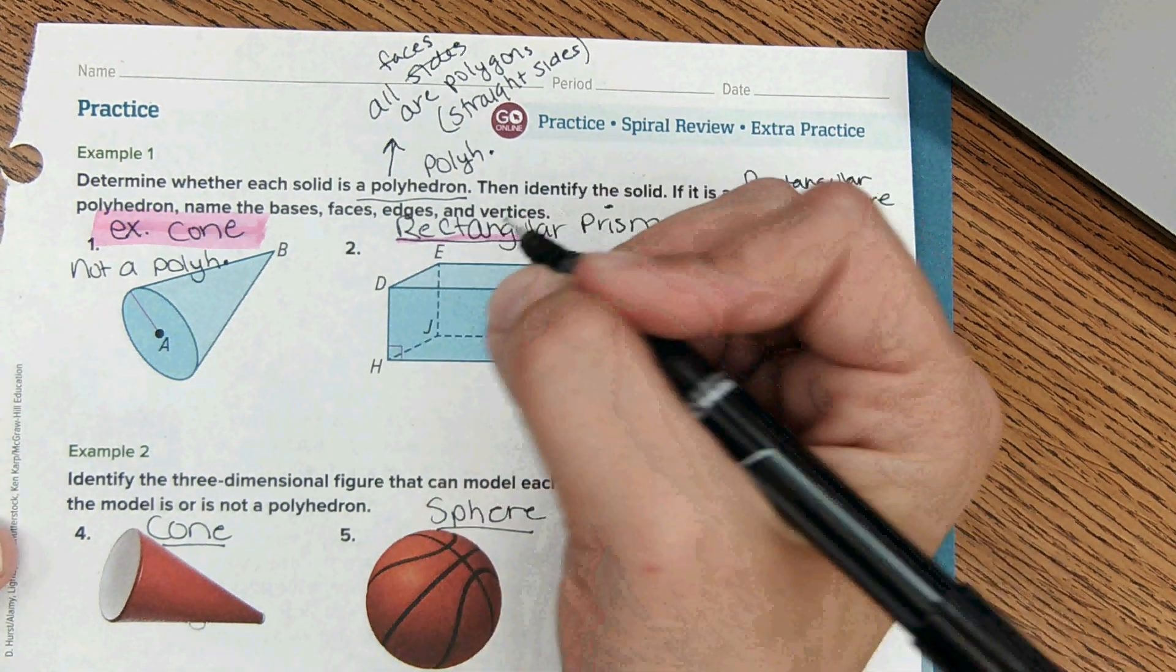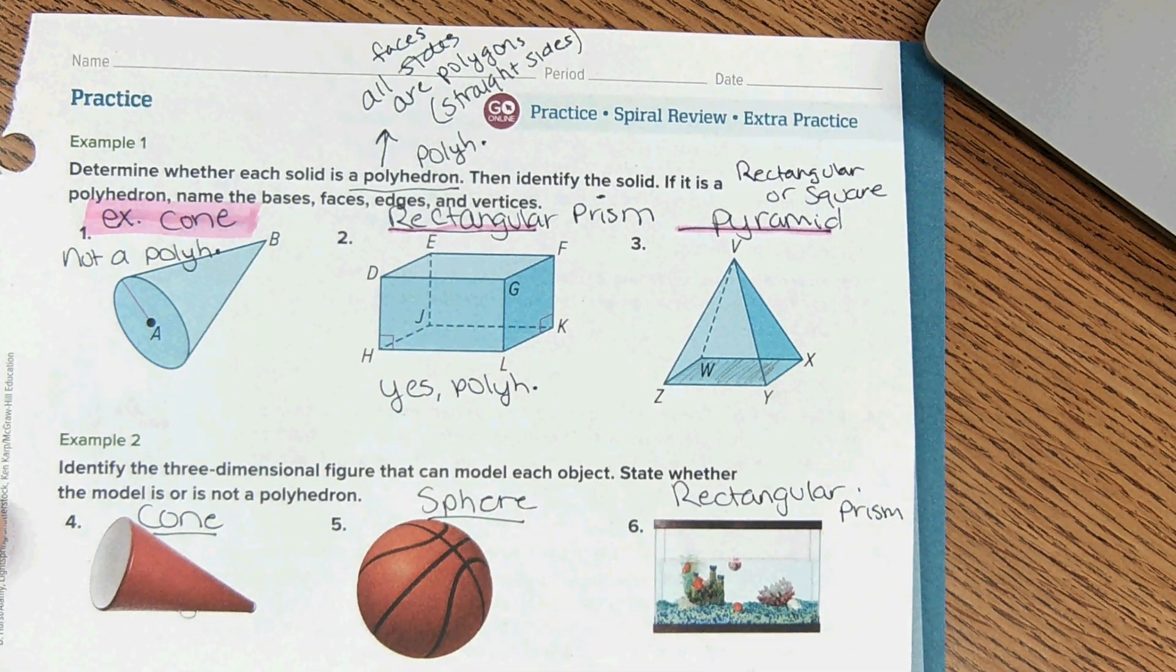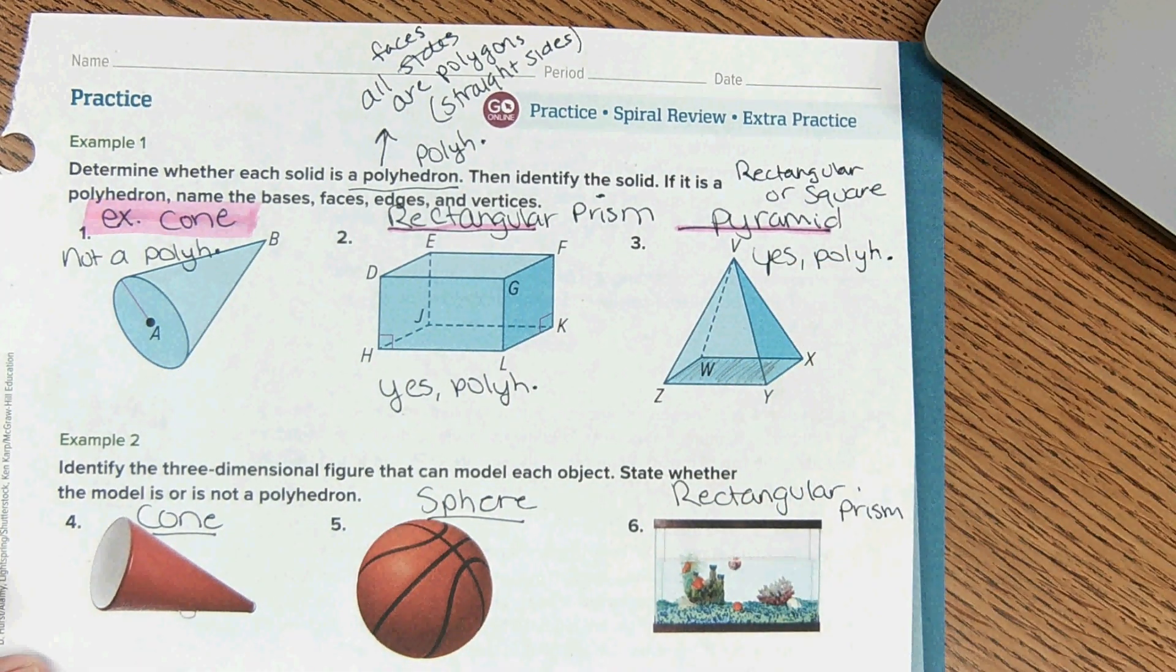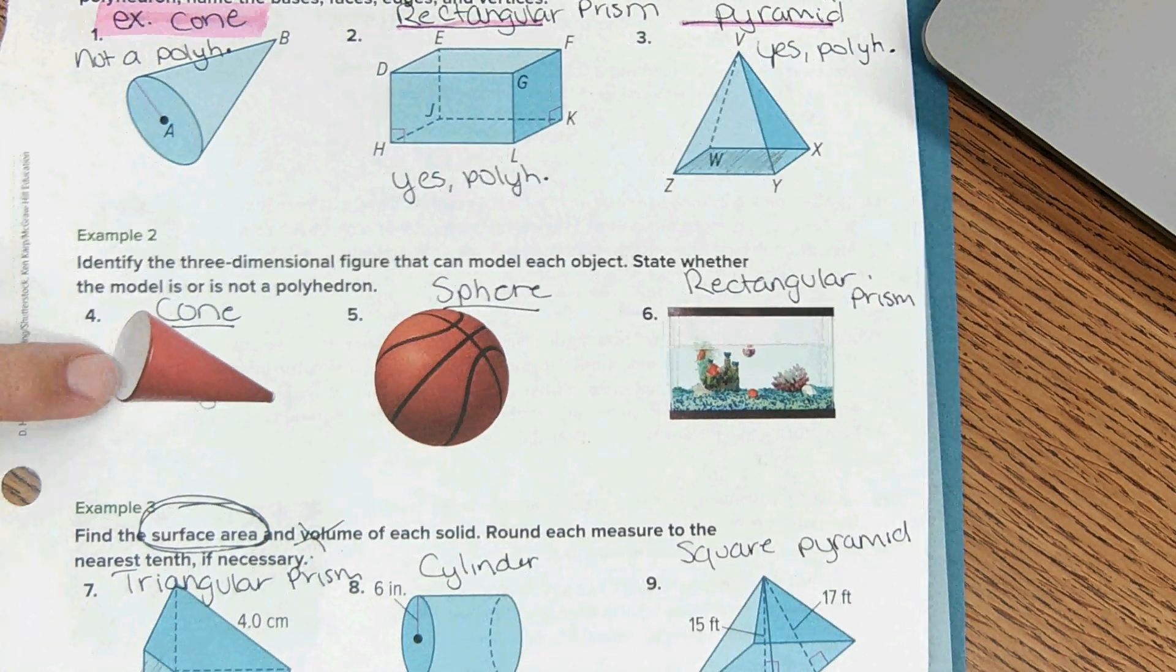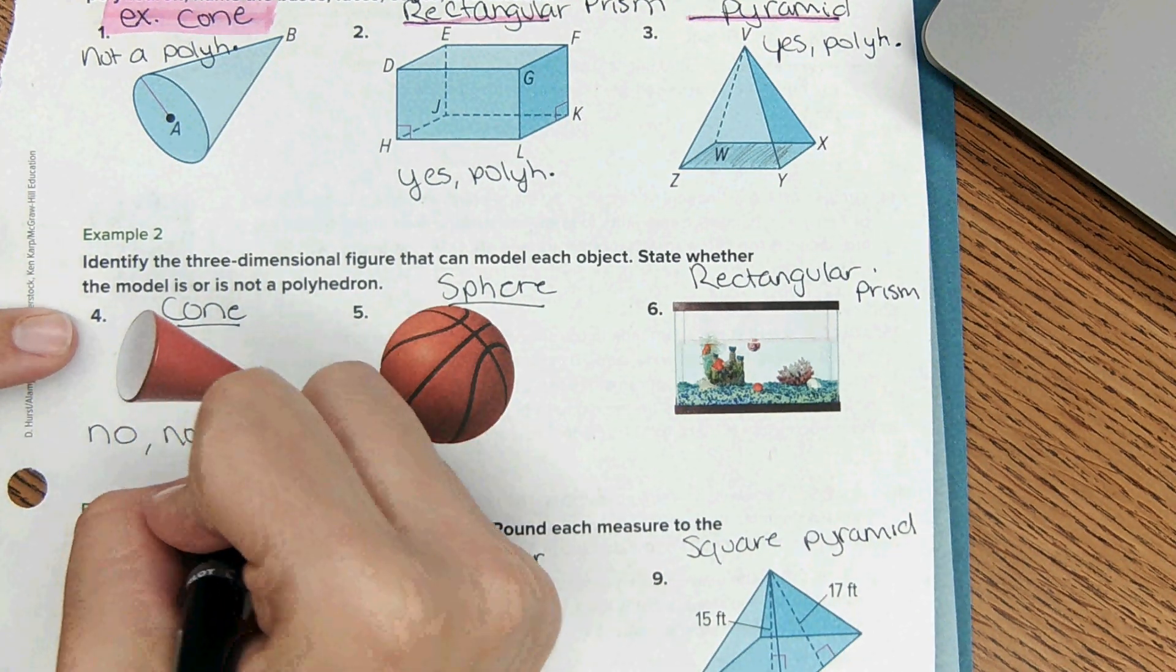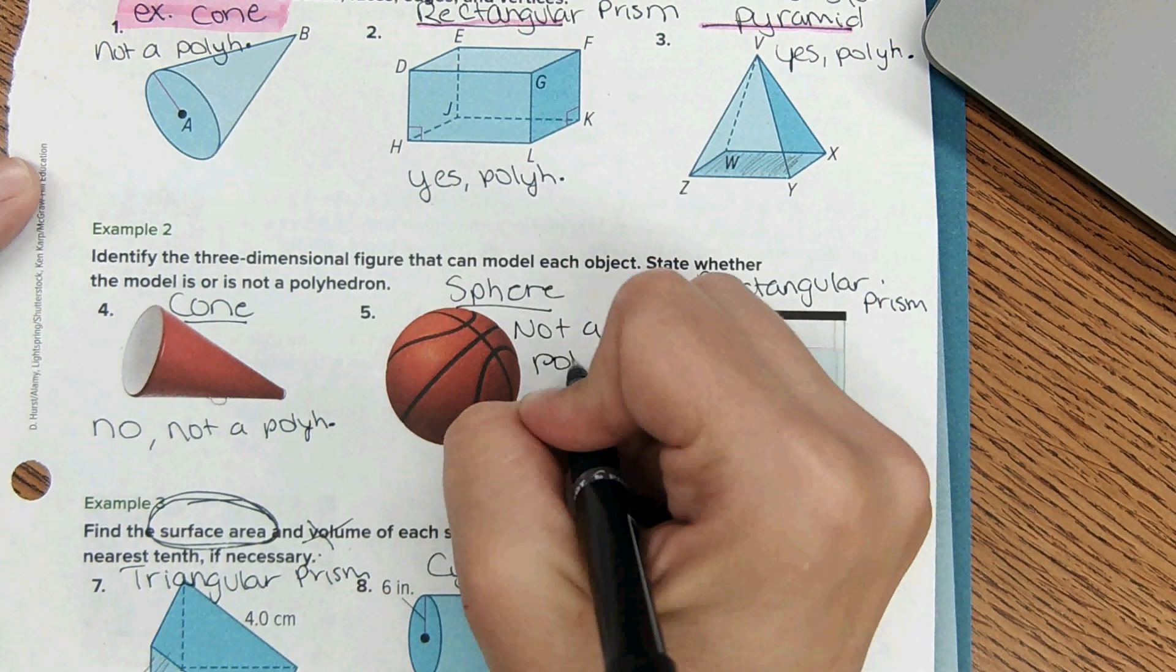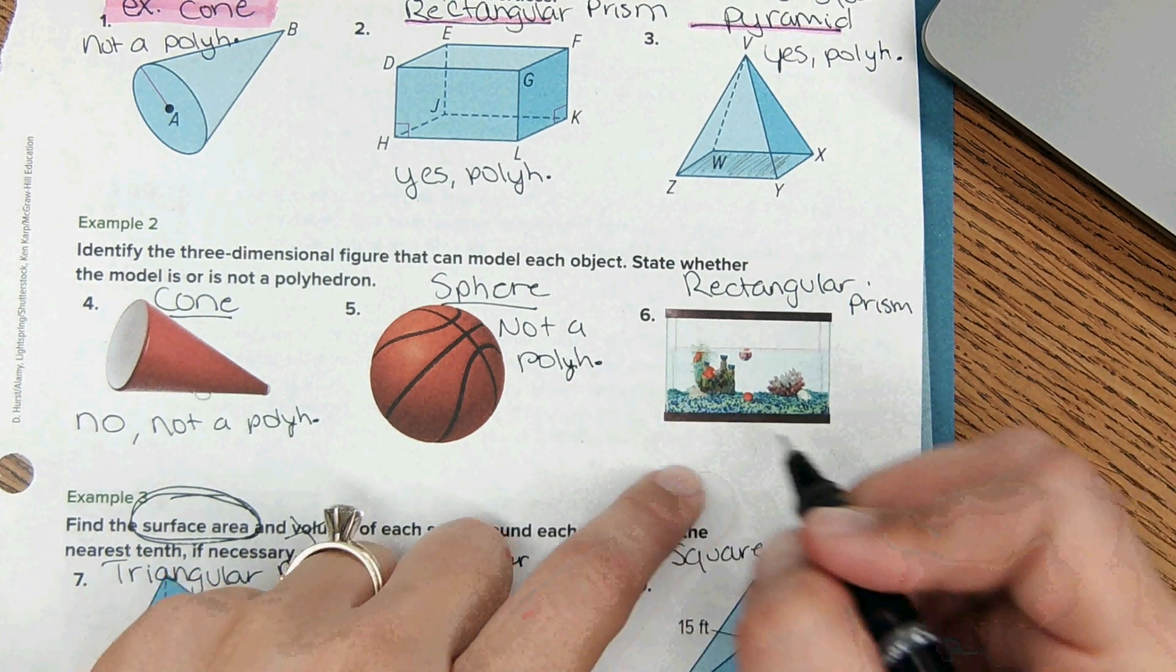Rectangular prism - does it have all straight sides? Yes, it's a polyhedron. Abbreviate polyh. Three - all straight sides, all the sides are polygons, so yes it is a polyhedron. Number four - is it a polyhedron? No, because of the curved edges, not a polyh. Sphere - curved edges, not a polyhedron. And a rectangular prism, all straight sides, so yes it is a polyhedron.